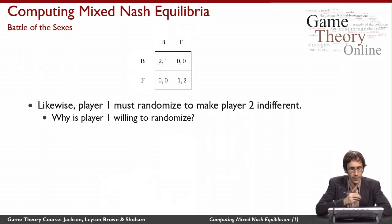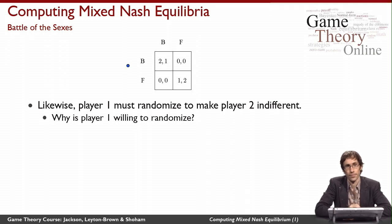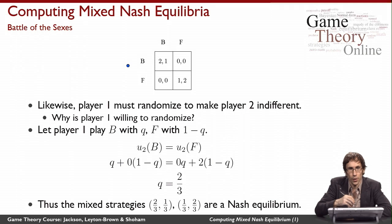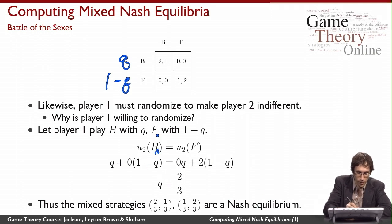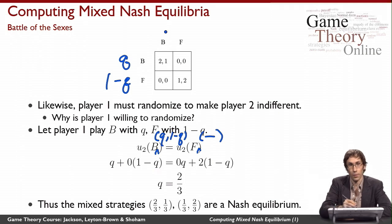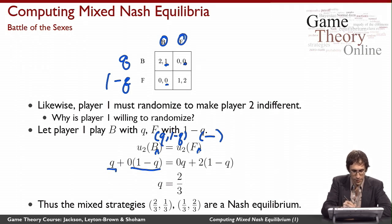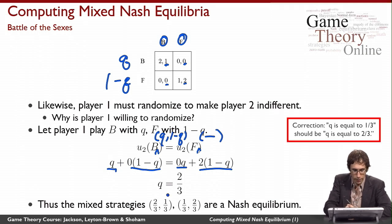In the same way, we can reason that if player two was randomizing — which we assumed he was — then player one must make him indifferent. Player one is willing to randomize because he is simultaneously being made indifferent by player two. So let player one play B with probability Q and F with probability 1 minus Q. If player two plays B, he gets 1 with probability Q and 0 with probability 1 minus Q. If he plays F, he gets 0 with probability Q and 2 with probability 1 minus Q. We again have an equation in one variable, and rearranging it, we find that Q equals one third.